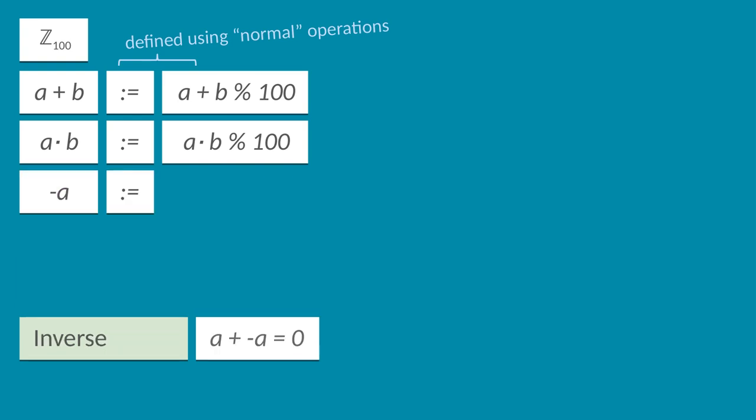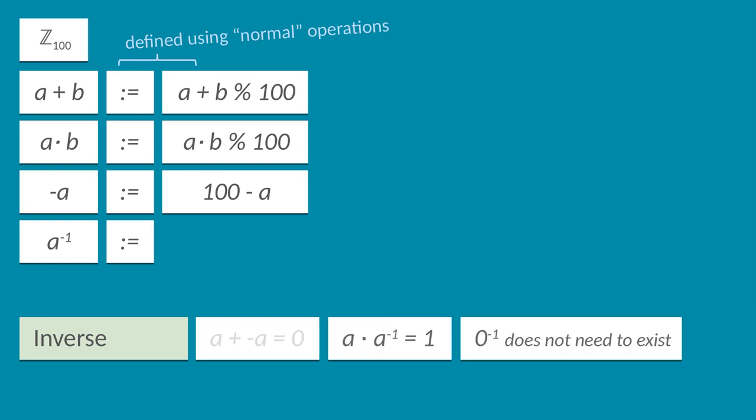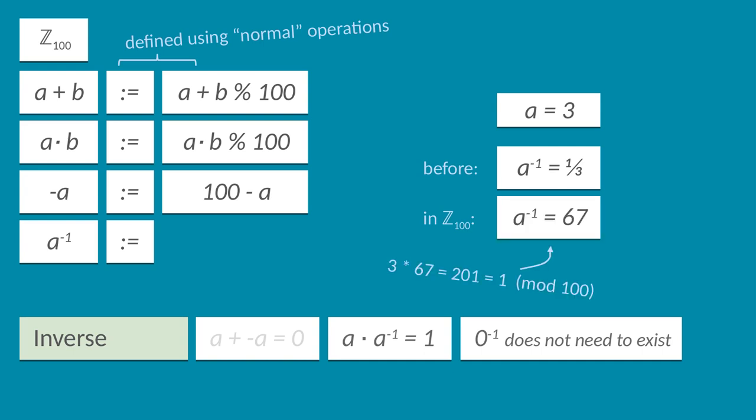For addition, we can define the inverse element of a value a quite simply as 100 - a. For example, -5 becomes 95, and -28 becomes 72. That way, when we add an element and its inverse, we get 100, which modulo 100 is 0. For the inverse element of multiplication, that is finding a value such that when multiplied we get 1, the story is different. Before, the inverse element of 3 was 1/3, but 1/3 is no longer an element of our field. However, after some searching, we find out that 67 is in fact an inverse element for 3, because 3 times 67 is 201, which modulo 100 is equal to 1.